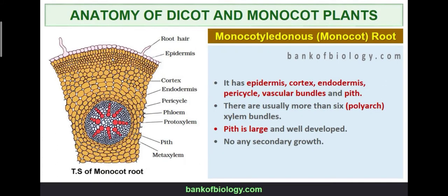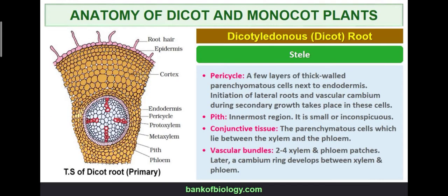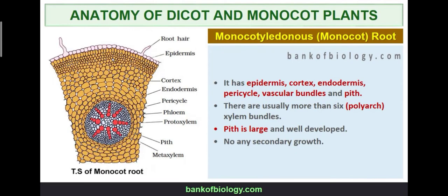For the monocot root, the structure is similar: epidermis, cortex, endodermis, pericycle, vascular bundle, and pith are all present. The key differences are that the pith is large and well-developed, and there is no secondary growth.